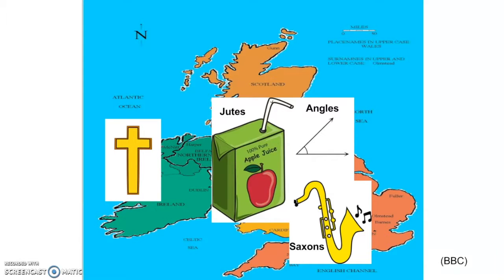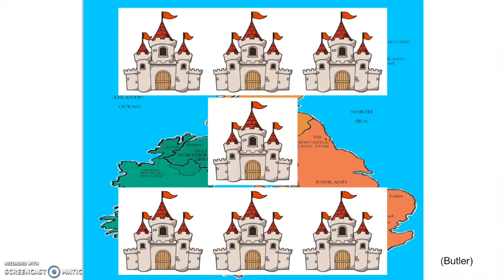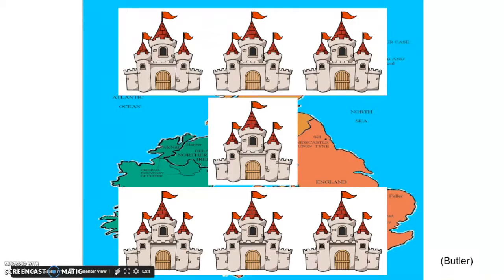The Anglo-Saxons ended up conquering Britain in the 400s. Britain ended up getting divided into a heptarchy, or seven kingdoms. In 597, Christianity ended up bringing Latin vocabulary to Britain. When Christianity spread to the British Isles, churches and monasteries were built.